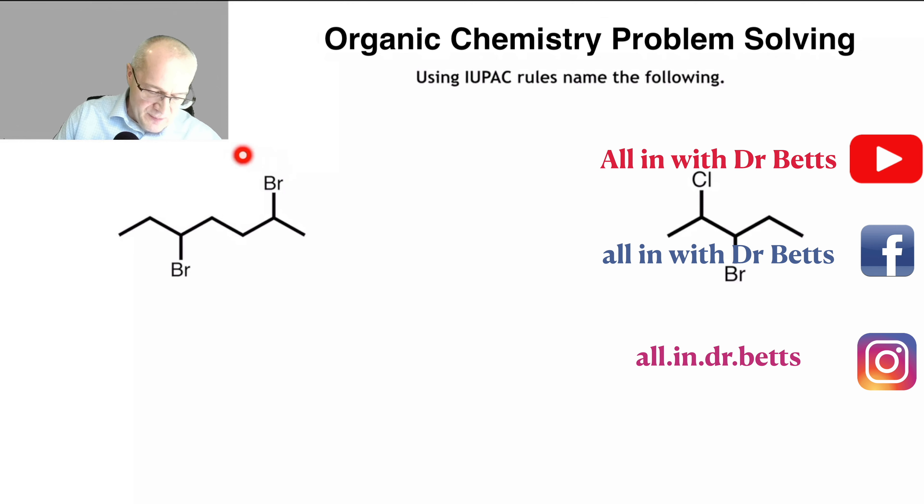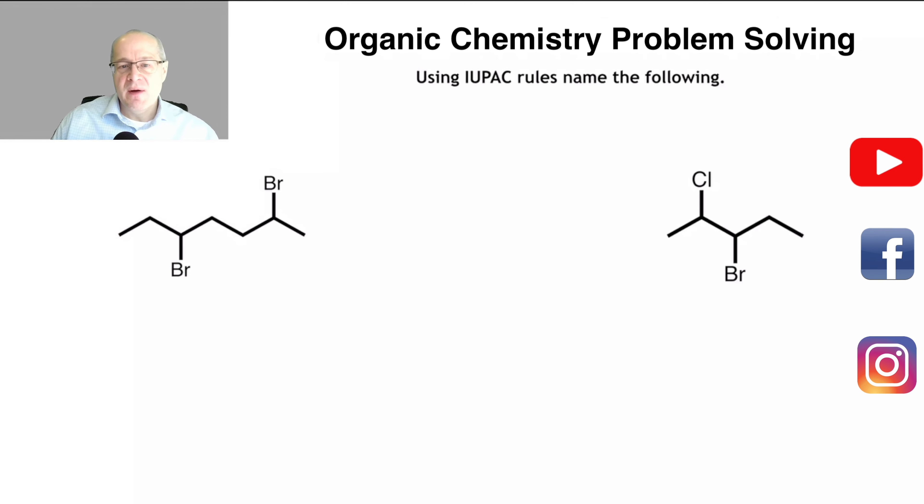So in our first example, here we go. Rule number one: find the longest continuous carbon chain. This one I think is pretty easy. One, two, three, four, five, six, seven. So this is a heptane. A seven-carbon chain is known as a heptane.